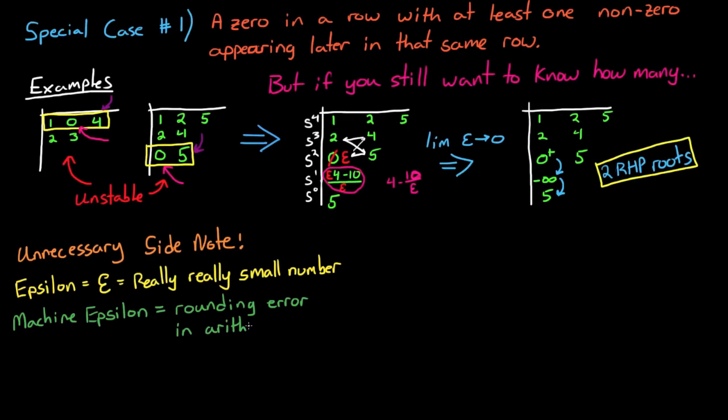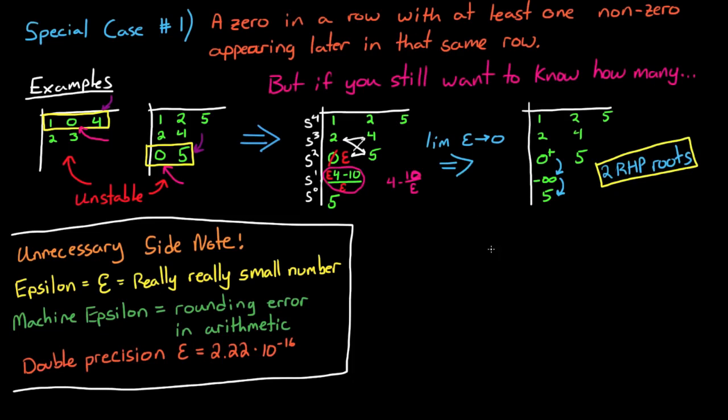For double precision arithmetic, which many computers run with, the machine epsilon is 2.22 times 10 to the minus 16th. So that's a pretty small number.